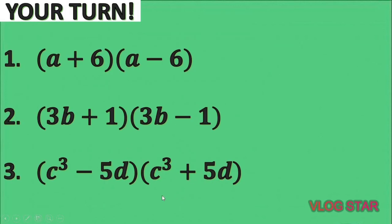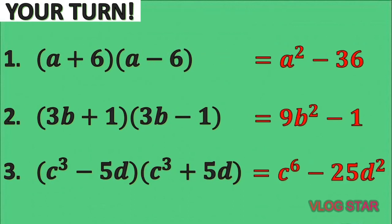Now for your turn, pause this video to answer three problems, then click play to check your answers. Here are the correct answers: for the first one, a squared minus 36; for the second one, 9b squared minus 1 — note that the square of 1 is still 1, since 1 times 1 equals 1; for the third one, c raised to the 6th minus 25b squared — the square of c cubed is c raised to 6, that is c cubed times c cubed.